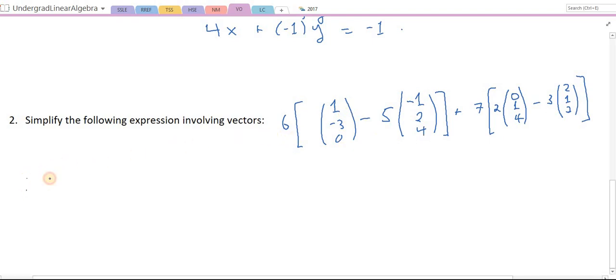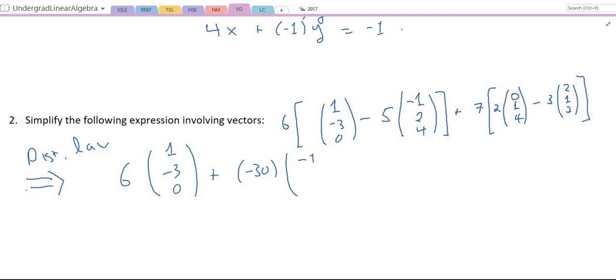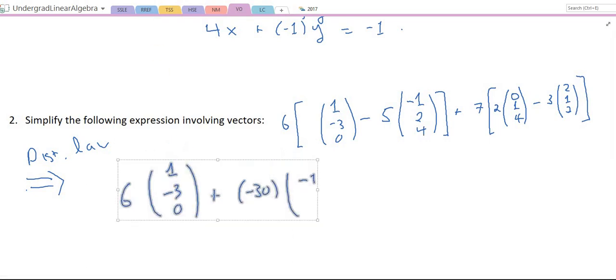Then this becomes 6 times (1, minus 3, 0). I can distribute once. Then the 6 times minus 5 becomes minus 30. And then here I have minus (1, 2, 4).